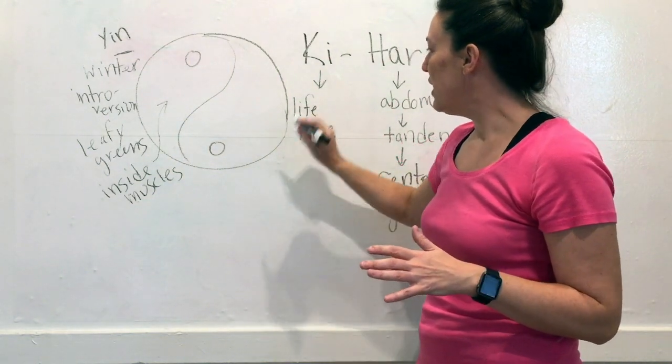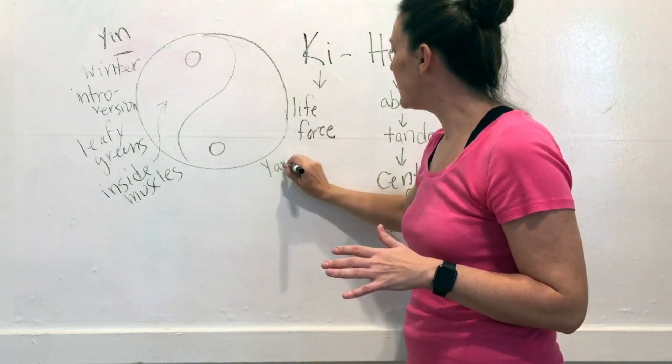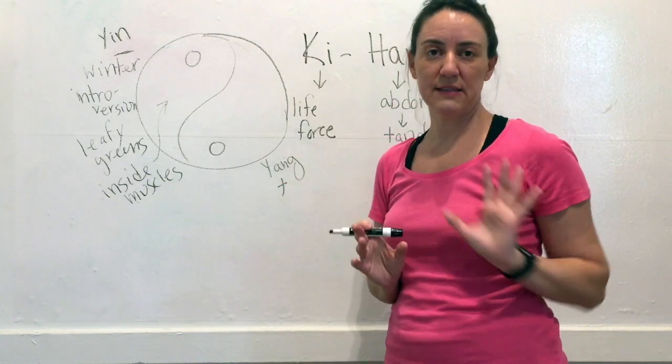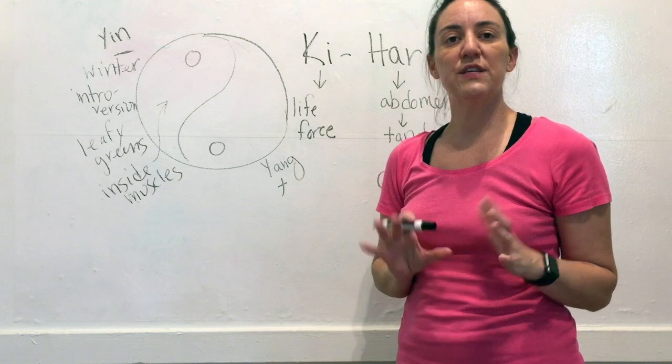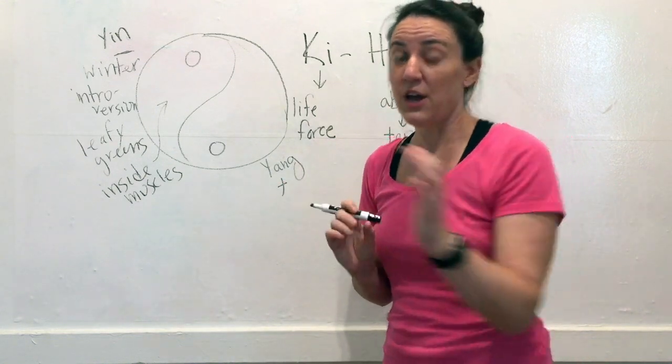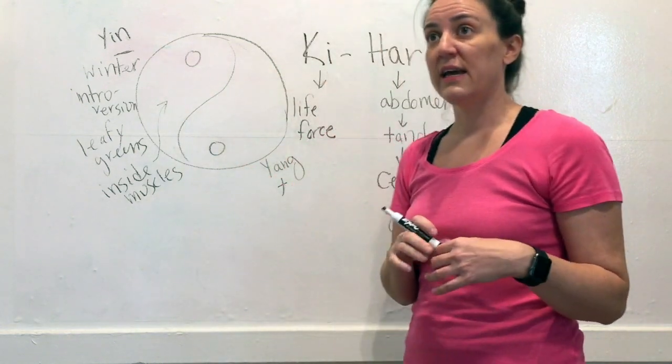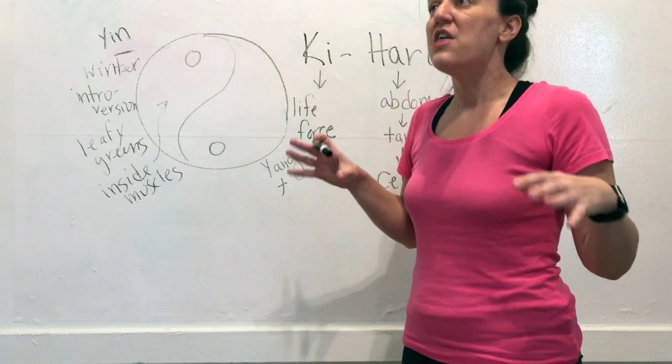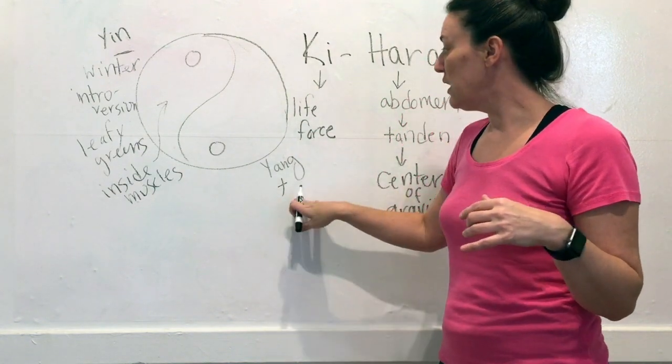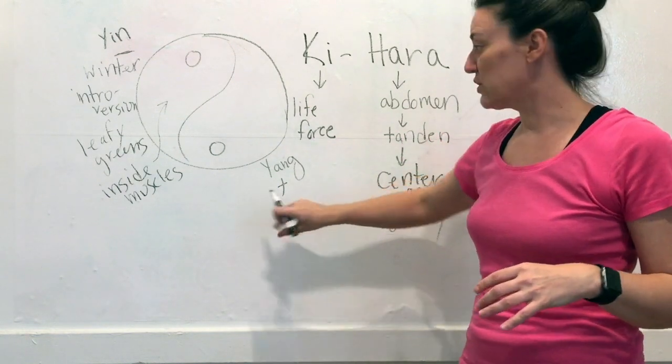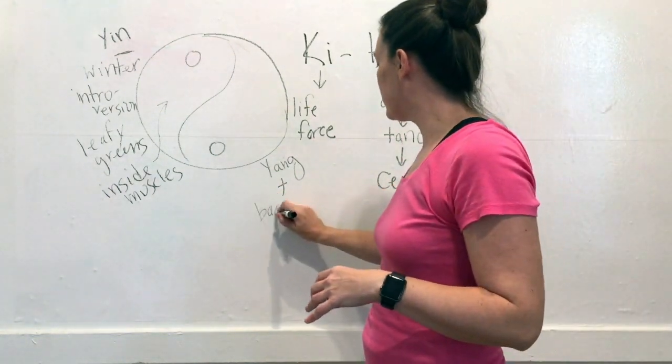On the other side, we have yang. And yang tends to be the positive polarity, that's the push polarity. So these are muscles that would take you away from the center of your body, like your hamstrings take off running, or like your quads, if you wanted to come out of a squat. The back of your shoulders, like, hey, get away from me, right? That's all the yang muscle groups. So these are your back outside muscles.